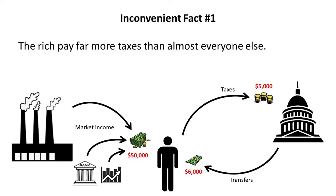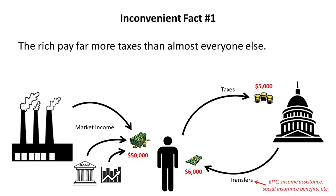Also, the federal government issues transfers to this person totaling $6,000. A transfer is money the government gives to a person in exchange for nothing. Typically these are the earned income tax credit, social insurance benefits like Social Security retirement income, income assistance, and all the various things we classify as welfare.